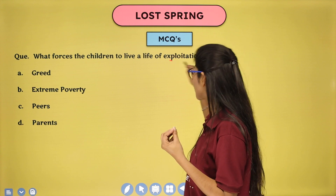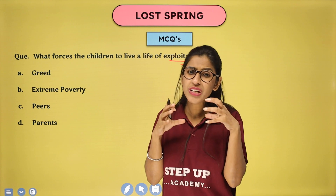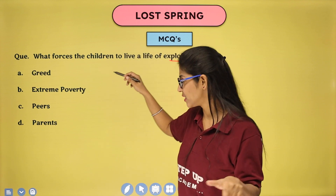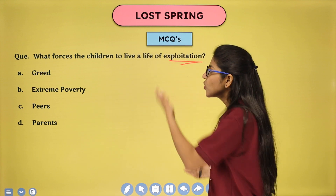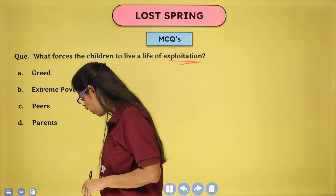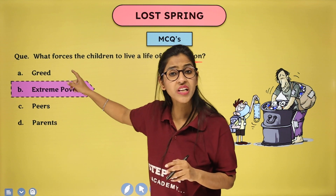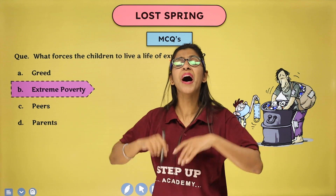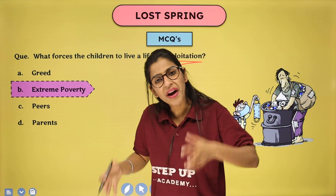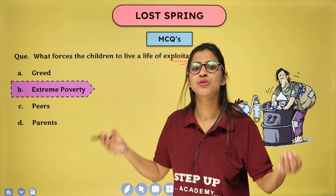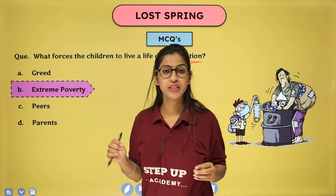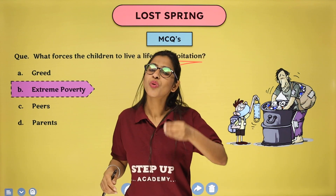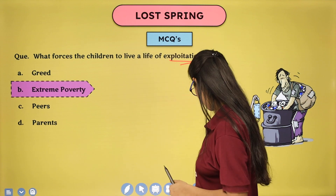What forces the children to live a life of exploitation? Options: greed, extreme poverty, peers or parents. It is not greed — they don't crave five-star dinners. It's not friends forcing them. Their parents don't intentionally want this either, but by default, children tend to pursue what their parents do. Because of extreme poverty, they have no other option available. So, majburi mein (out of compulsion), without wanting to, they have to carry forward the profession their parents were in.